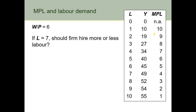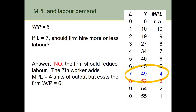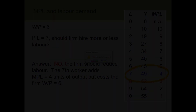Now with the real wage still equal to 6 and the level of labour at 7: output is 49 and the marginal product of labour is 4. So the benefit gained from adding one more unit of labour is 4 units of output, but the cost — the real wage of 6 — exceeds the benefit. The firm should not hire an additional unit of labour.